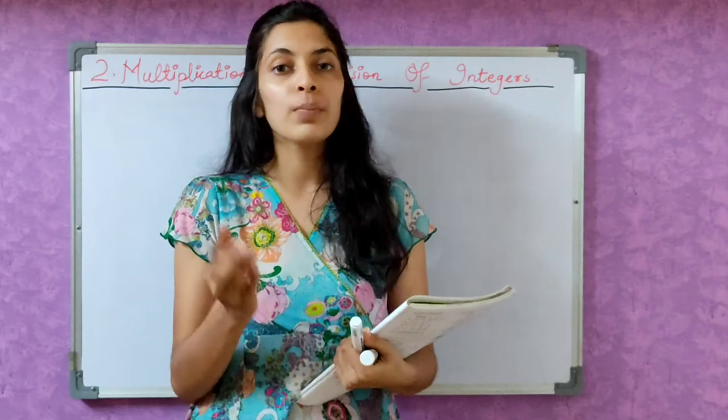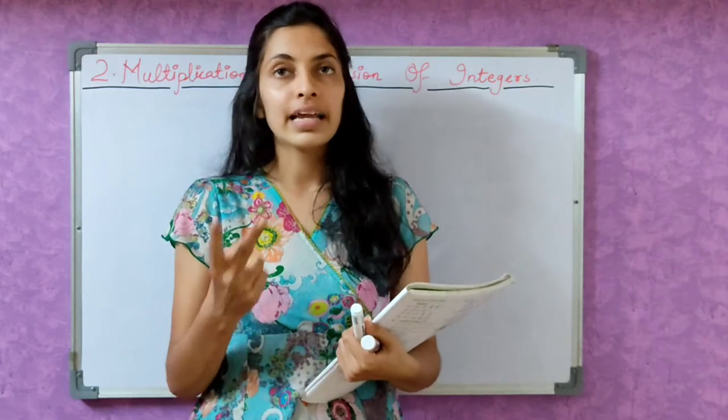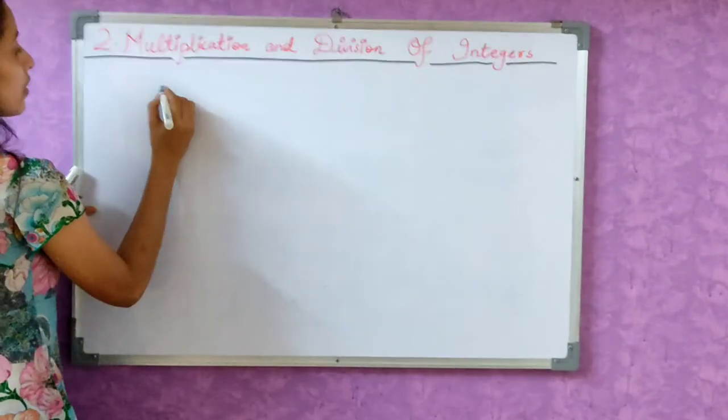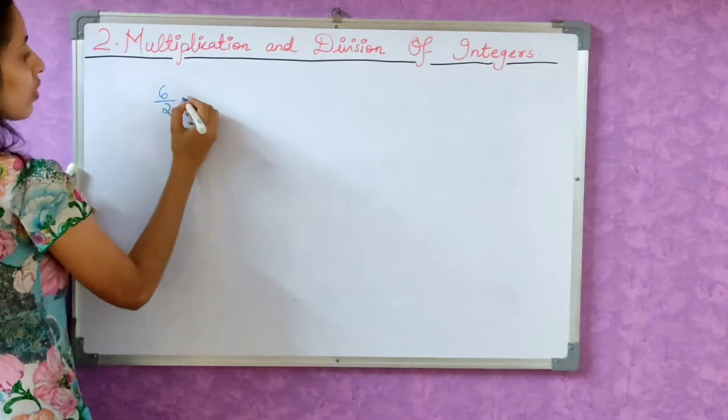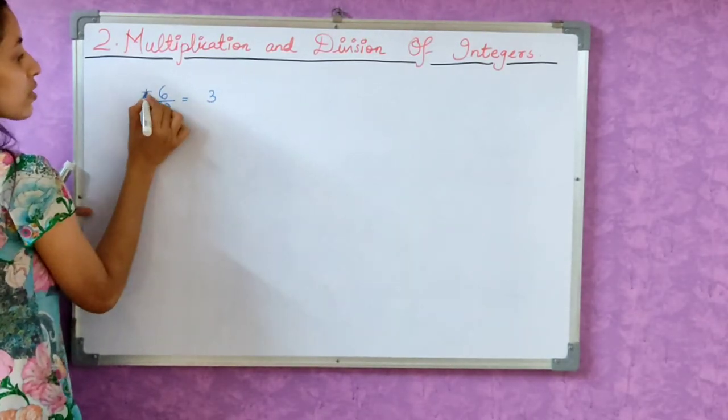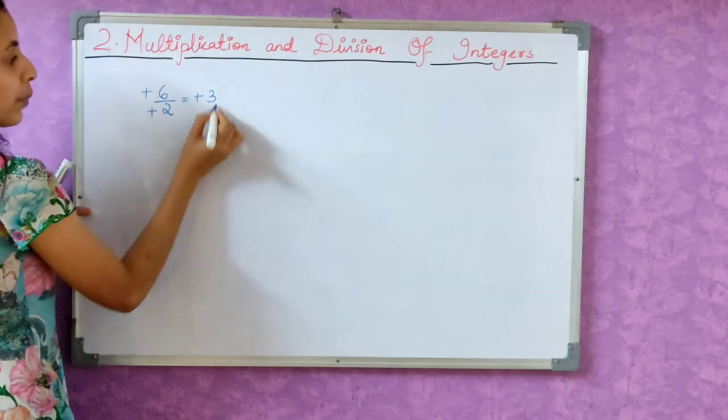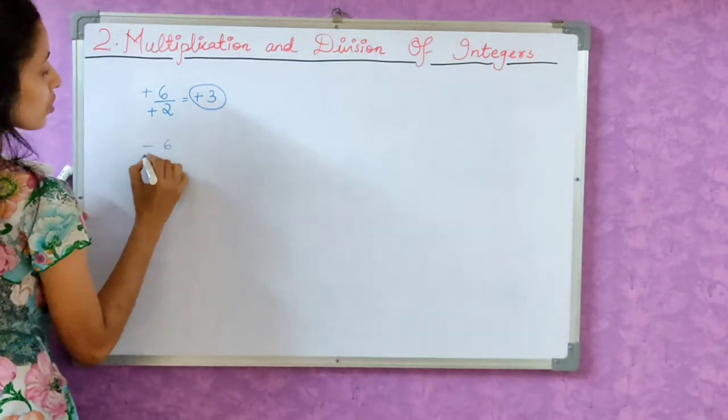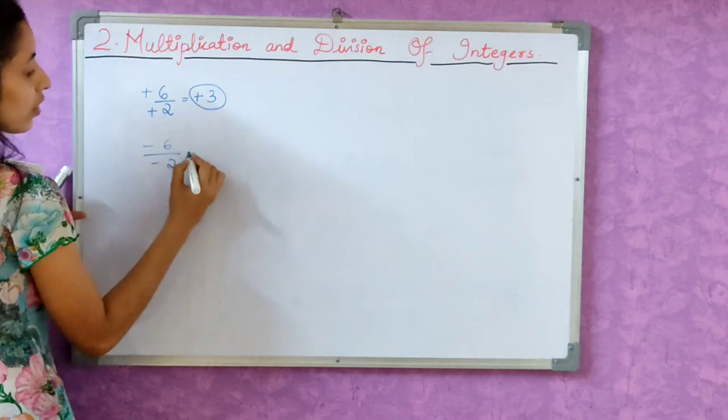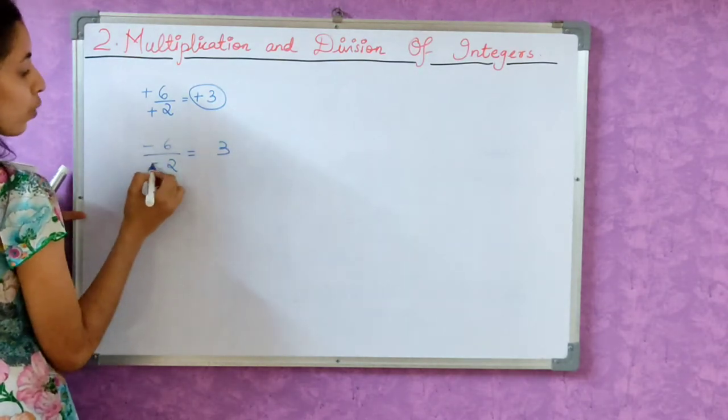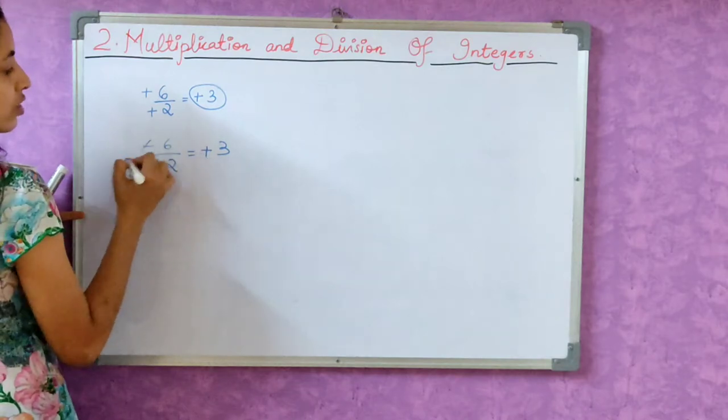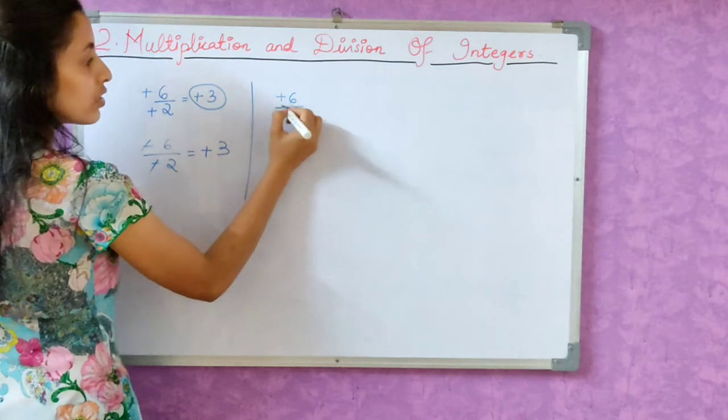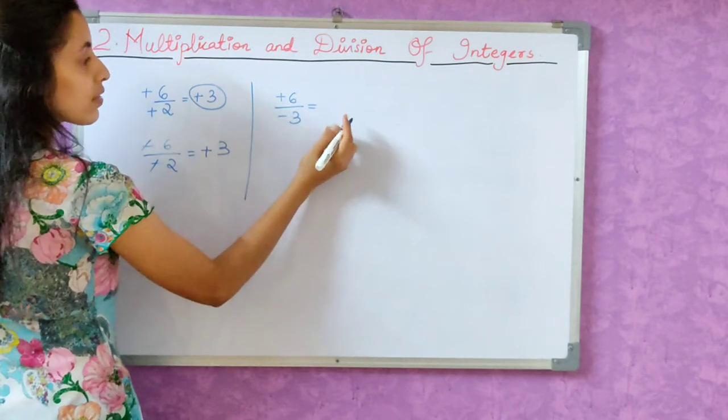The first rule is that we can't divide any number by zero. The second rule is that the quotient of two positive numbers is a positive number. Now let's see here. 6 divided by 2. What is our answer? 3. This is positive and this is positive, and our answer is positive. The quotient is positive if both integers are positive. Similarly, if both integers are negative, what is our answer? If both are negative, then our answer will be positive because they cancel.